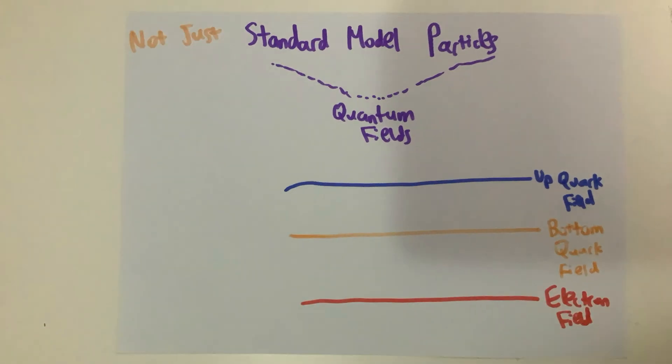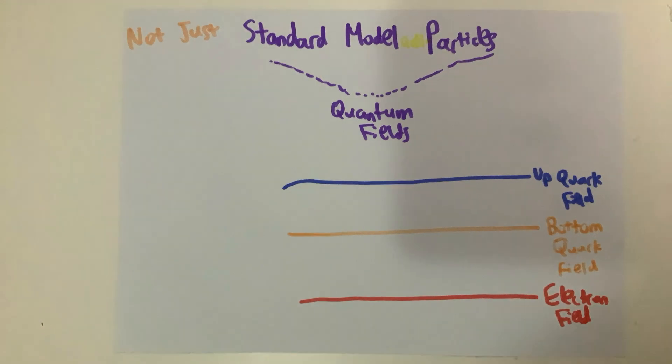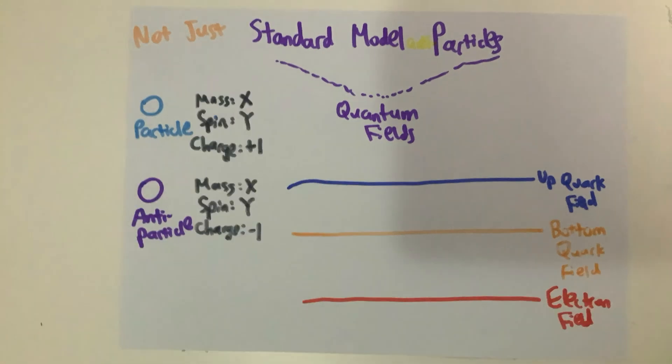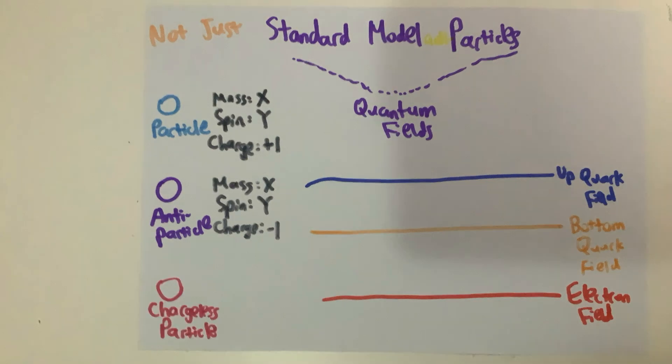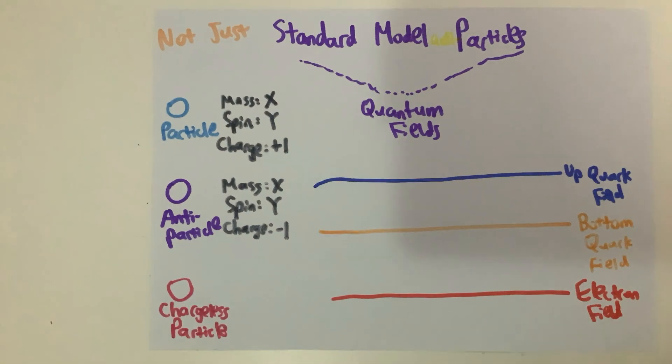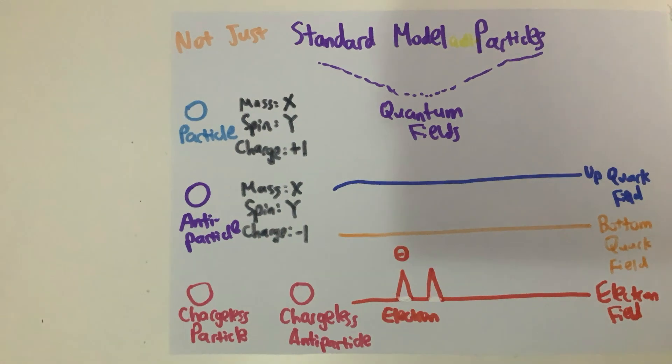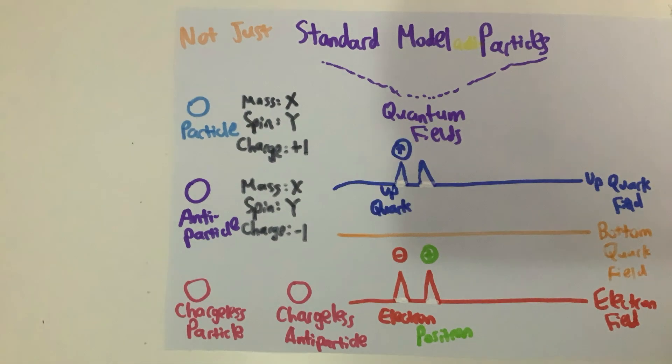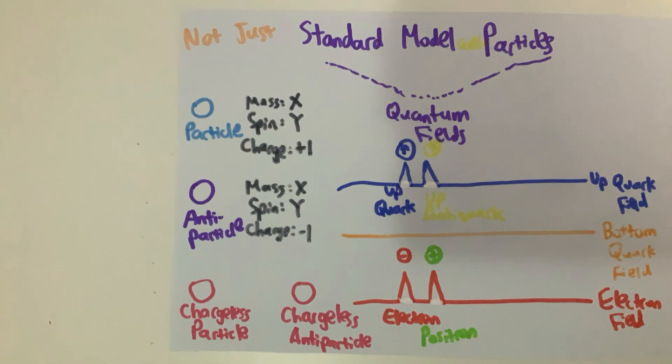Quantum fields do not just produce particles, they also produce antiparticles. Antiparticles have the same properties as their respective particles, except that they have opposite charges. For particles without electric charges, they are their own antiparticles. For example, the electron field produces both electrons and antielectrons, sometimes called positrons, which have positive charges. Similarly, the up-quark field can also produce an up-antiquark, which also has an equal but opposite electric charge.